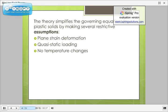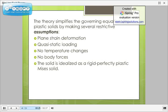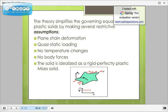No temperature changes are considered. No body forces are required. The solid is idealized as a rigid plastic Mises solid. Well, this implies that the neglect of elastic strain and treats the flow stress as constant. This diagram shows the plane strain condition.